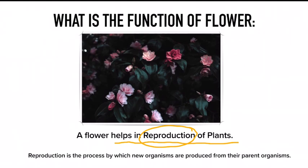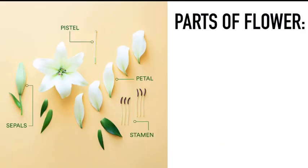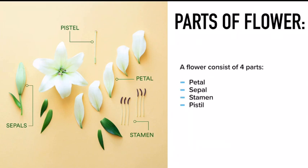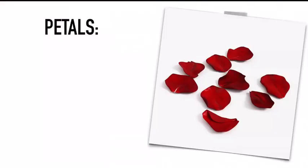There are basically four parts of a flower: we have petals, we have sepal, we have stamen, and we have pistil. Let's understand one by one what these parts are and what their functions are.